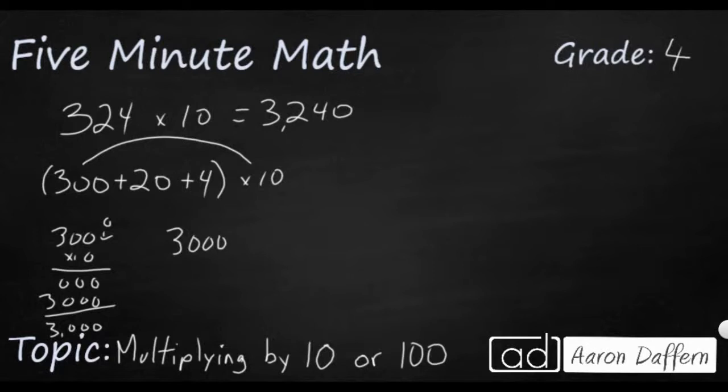Now I need the 20 times 10. So 20 times 10, that's going to be 200. So it's the same thing. 20 times 10 is just 20 with that extra 0 added right there. So I'm going to put that right here as 200.